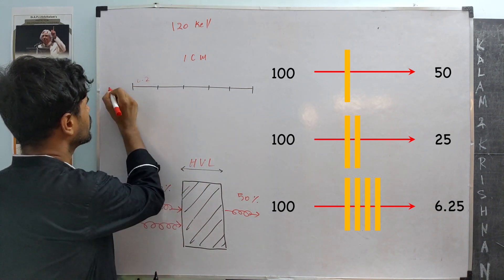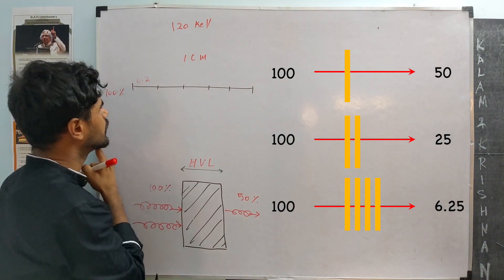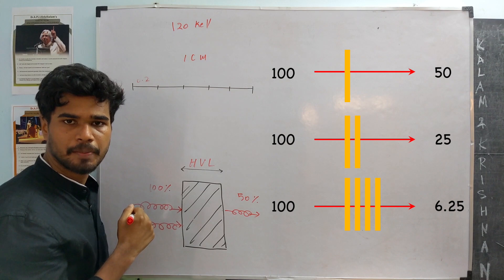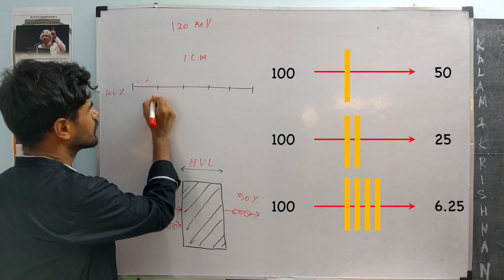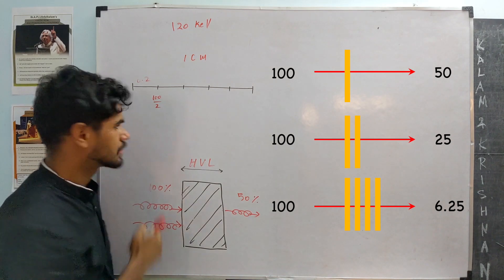So, if 100% of photons enter this side, after one half-value layer, how much will be left? We will be left with 100 by 2. That is 50%.